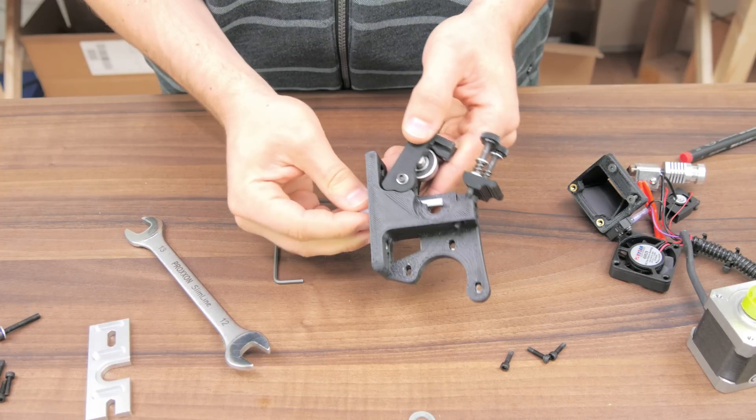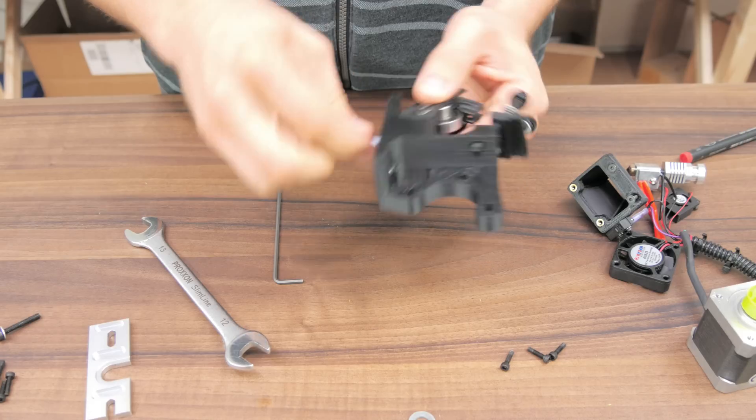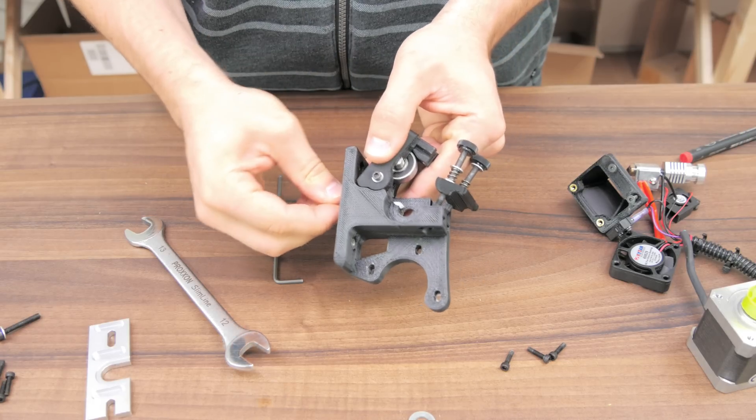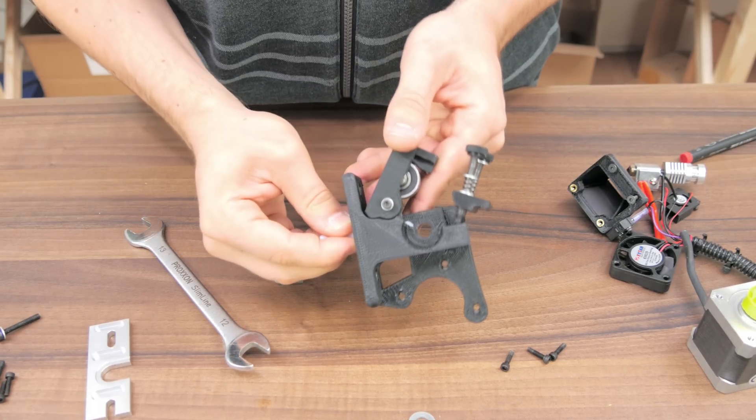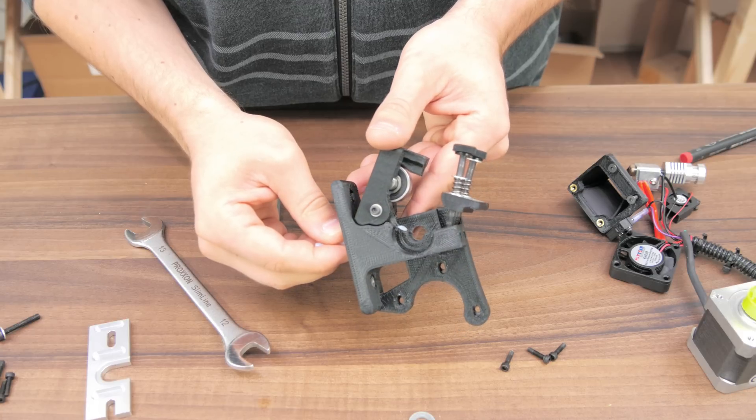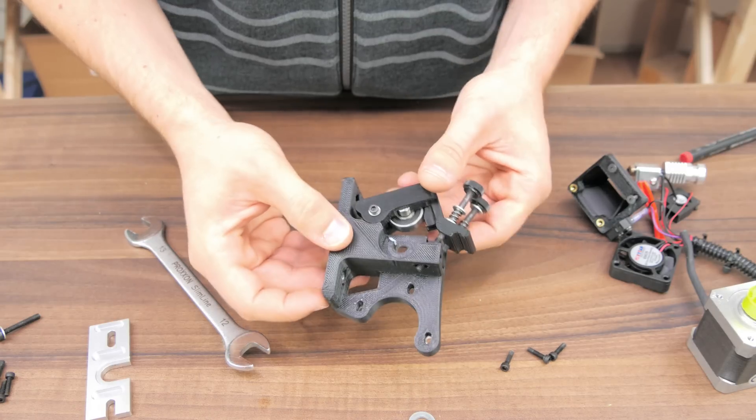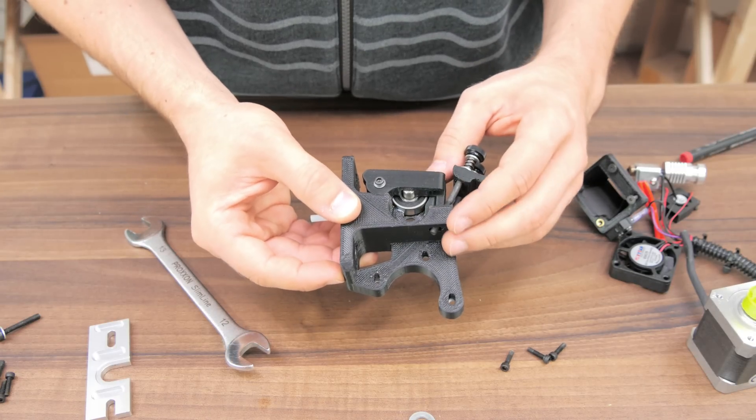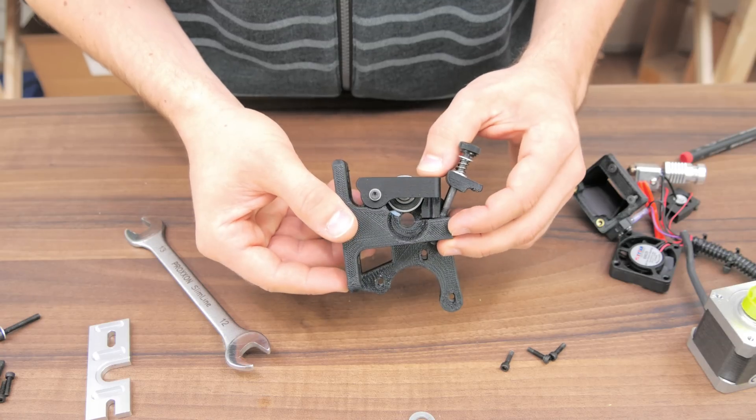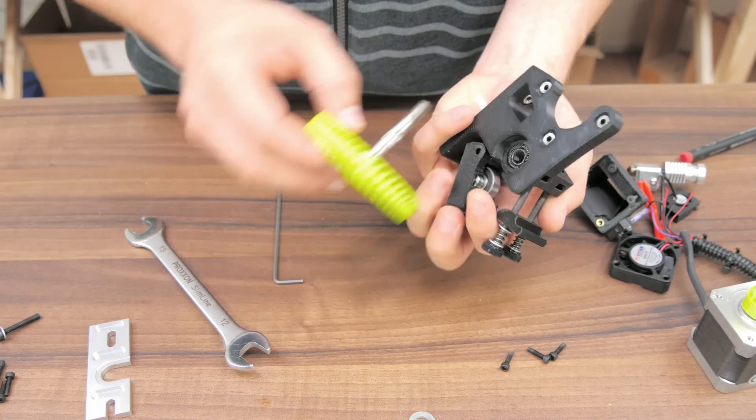The way you want to install the teflon tube is that it guides the filament as closely as possible to the hobb bolt without colliding or rubbing on the idler bearing or the hobb bolt. Also grab some filament to visualize the filament path for you.